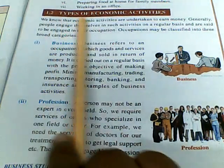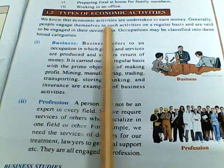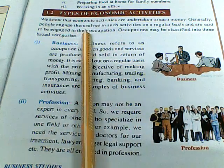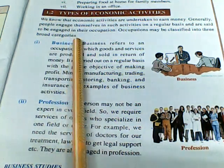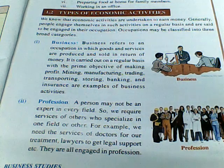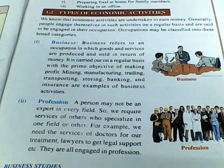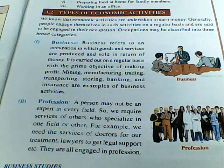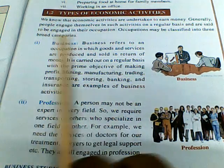Let us study the types of economic activities. We know that economic activities are undertaken to earn money. Generally, people engage themselves in such activities on a regular basis and are said to be engaged in their occupation. People dedicate most of their days — around 26 days out of 30 — to such work. Occupations may be classified into three broad categories.